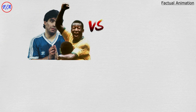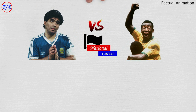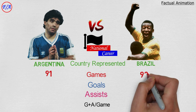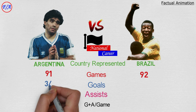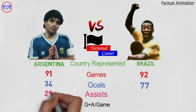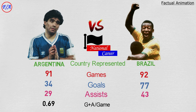Comparing their full national careers: Maradona played 91 international games, scored 34 goals, and provided 29 assists — 0.69 goal contributions per game. Pelé played 92 games, scored 77 goals, and provided 43 assists — 1.31 goal contributions per game.